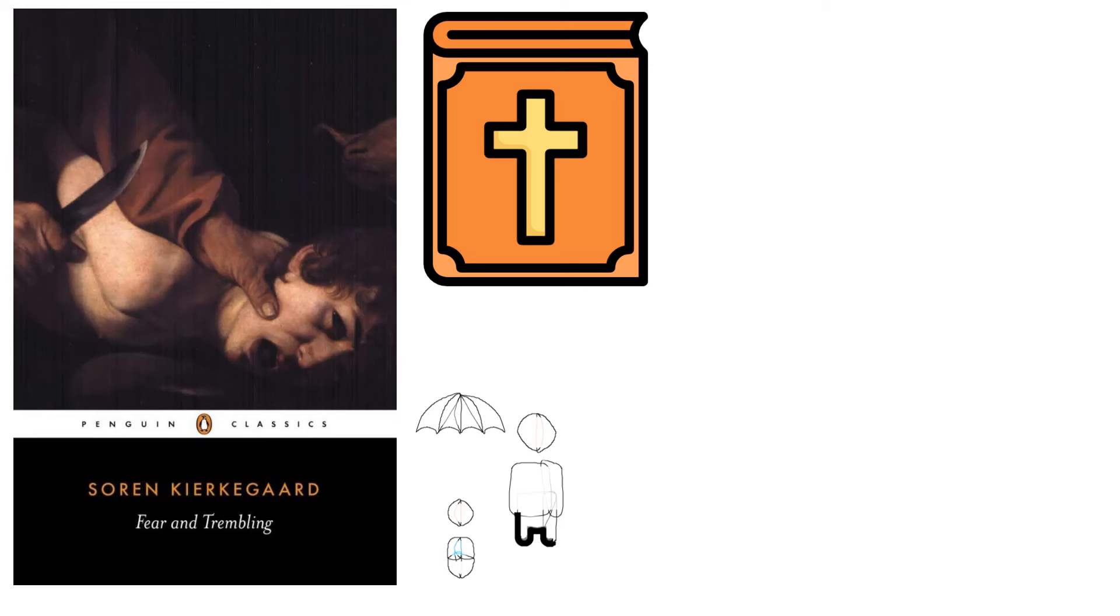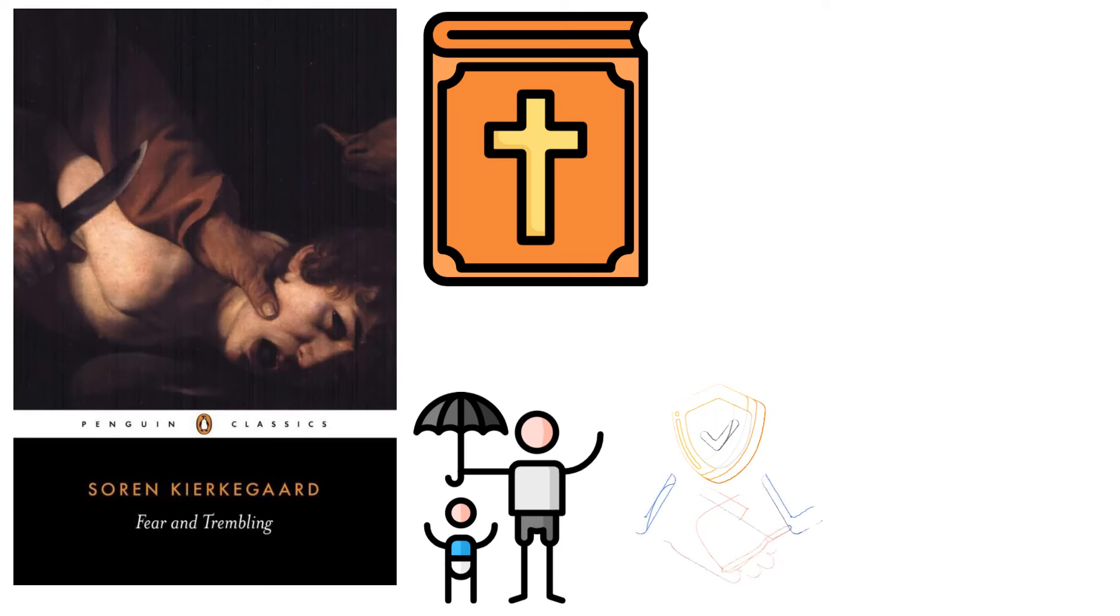Most academics believe Fear and Trembling is largely autobiographical, reflecting Kierkegaard's choice to leave his sweetheart Regine Olson and devote himself to theology. The tract is also regarded as a founding book of existentialism, since it deals with the struggle to find meaning in life and the role religion plays in that search.